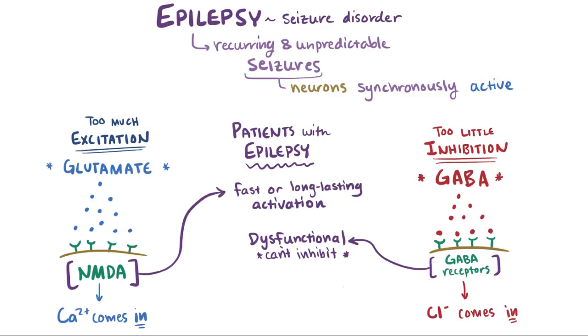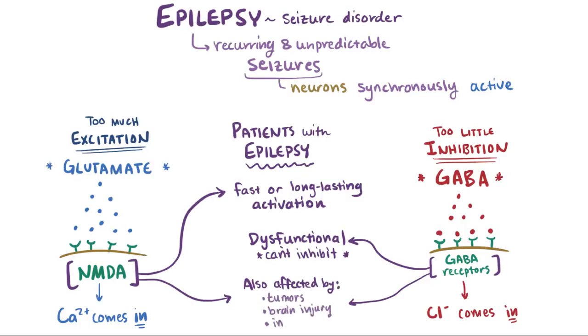In addition to potentially having a primary genetic cause, these receptors and ion channels might be affected by all sorts of things like brain tumors, brain injury, or infection.